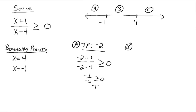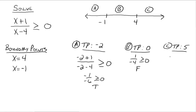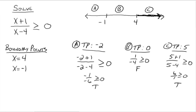In region B, a good test point is 0. Plugging in 0 gives 1 over negative 4, which is false. In region C, a good test point is 5. Plugging in: 5 plus 1 divided by 5 minus 4 is greater than or equal to 0 — that gives 6 over 1, so that's true as well. We want the true regions, so we shade region C with an arrow going to infinity, and region A.